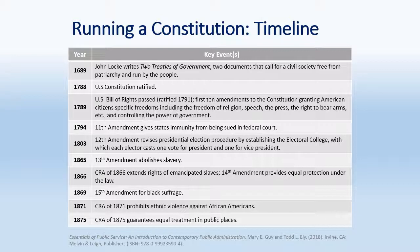Your book from Guy and Ellie has, in chapter one, a long list of events — really constitutional and law events that have happened in the context of running a constitution. If you read Wilson, or at least part of the Wilson piece, you see that the term 'running a constitution' became associated with that work Wilson wrote in 1887, when he said it's getting harder to run a constitution than to frame one.